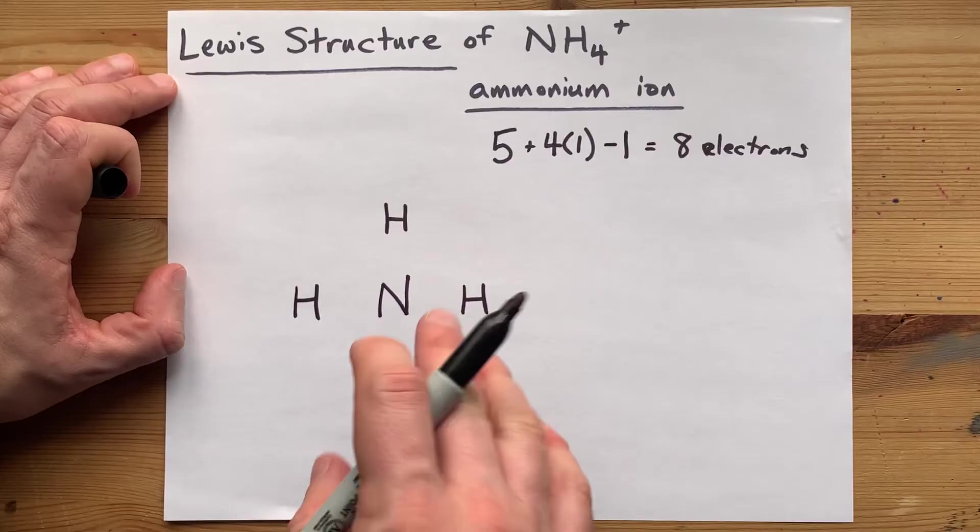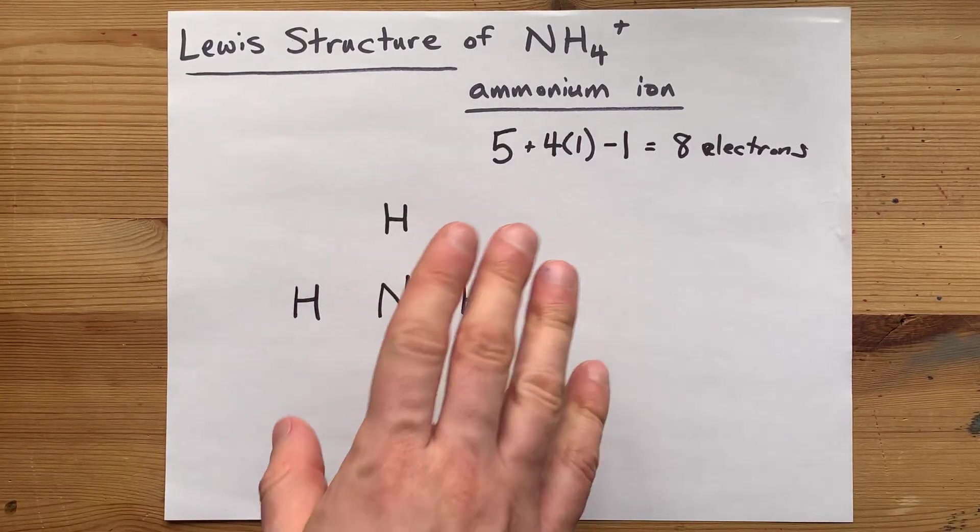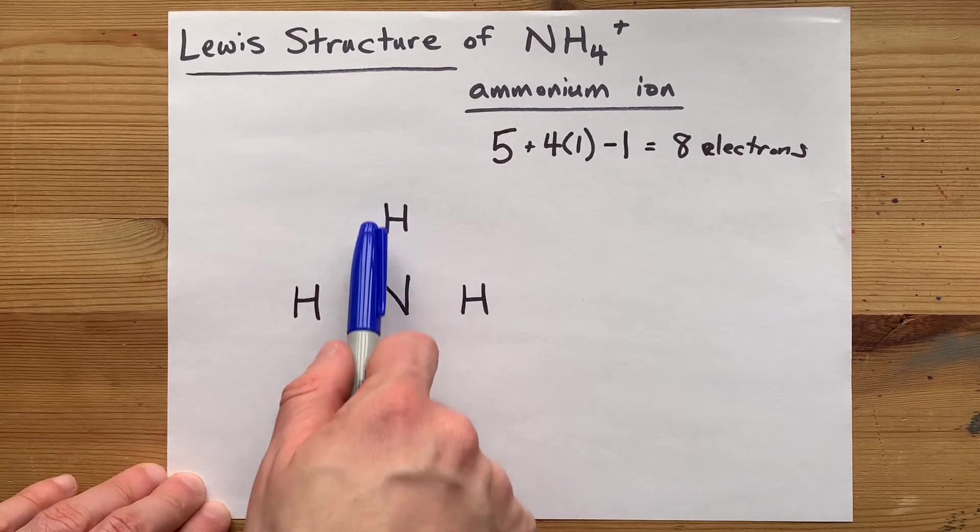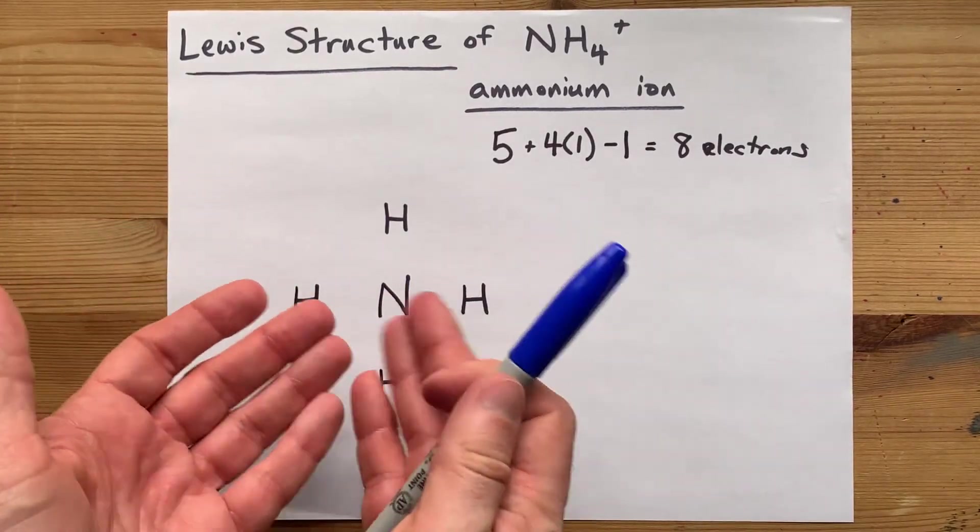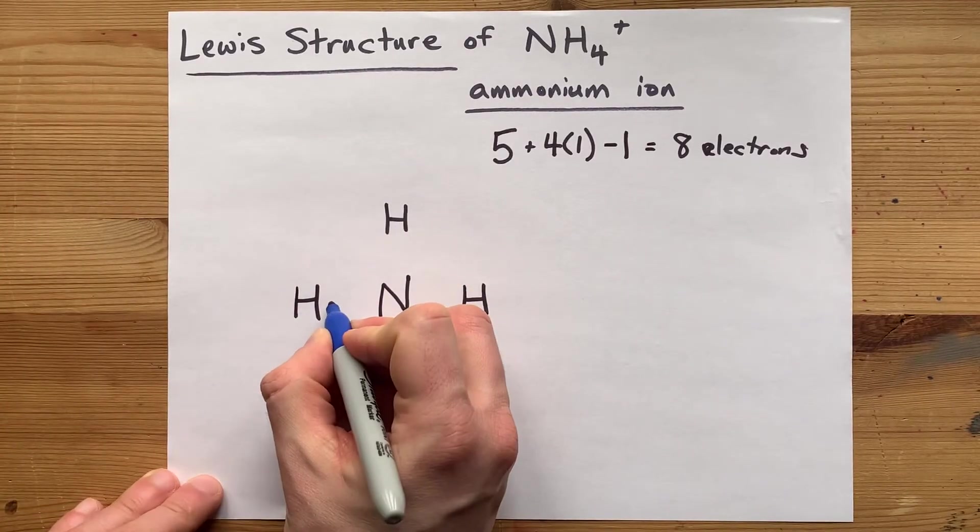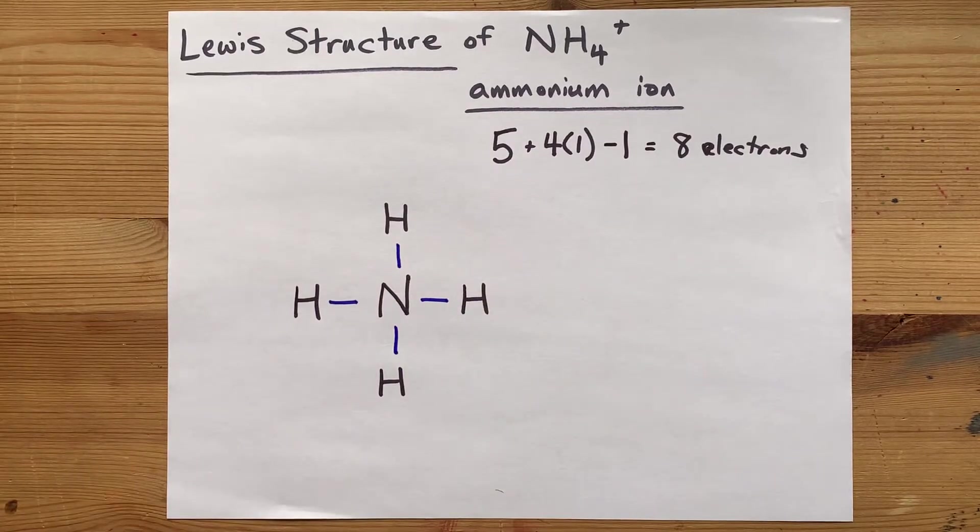Now the way I draw covalent Lewis structures or Lewis structures between non-metals is to single bond the center atom with all of the outer atoms first. If they weren't held together with even single bonds, they wouldn't be bonded. So I draw one, two, three, four single bonds.